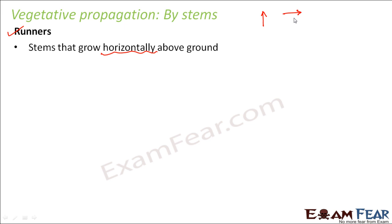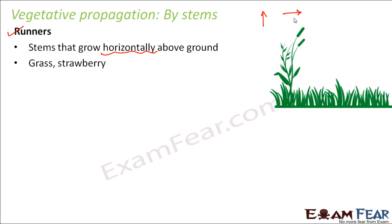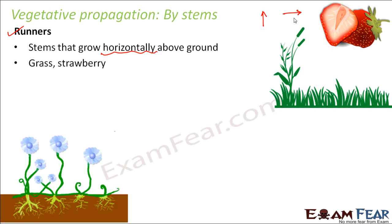Examples of such plants include grass and strawberry, where you can see the stem running horizontally and above the ground. The stem is growing horizontally, and at each interval there are points called nodes. At these nodes, buds develop, and from each node, new roots and new stems are formed — that is how new plants are actually produced. This is called a runner because the stem is running along the surface of the earth.